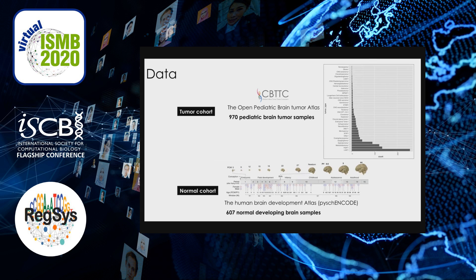In order to achieve this, we've obtained a tumor cohort and a normal cohort. The tumor cohort comes from the Open Pediatric Brain Tumor Atlas and the Children's Brain Tumor Tissue Consortium. These provide samples that span diverse types of pediatric brain tumors. The normal cohort comes from the Human Brain Development Atlas, spanning multiple brain regions ranging in age from embryonic development through adulthood.